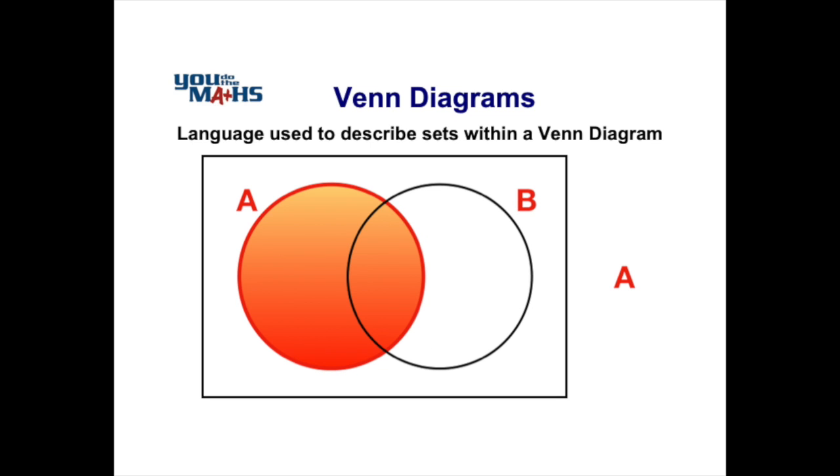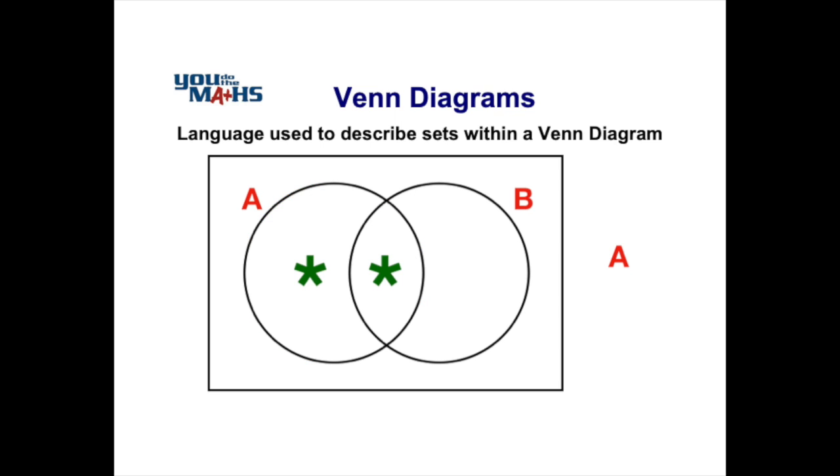In the case of this video, we're going to show the separate segments with asterisks. Those asterisks in green indicate all the elements of the Venn diagram that belong to set A.